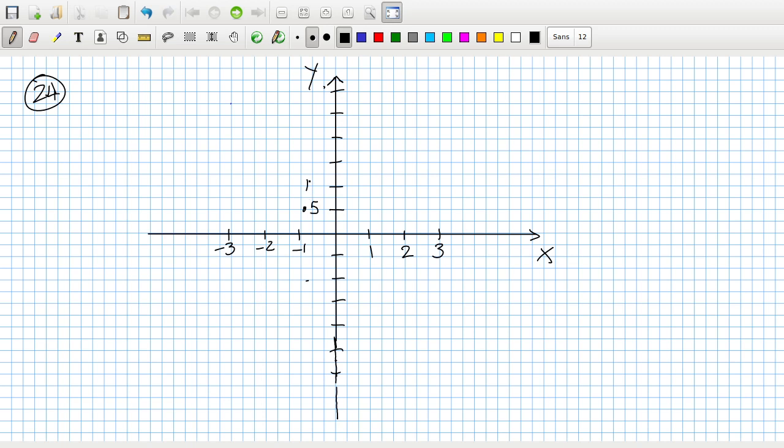0.5, 1, 1.5, 2, 2.5, 3. Okay. So the first point is minus three, minus a half, which would be there. Minus two, zero. Minus one, a half. Zero, one. One and 1.5. Two, two. Three and 2.5. I'll just mark in here that this is minus 0.5 and this is minus one.